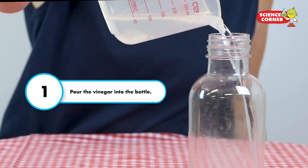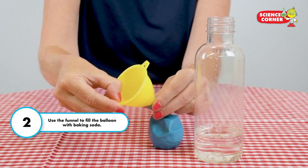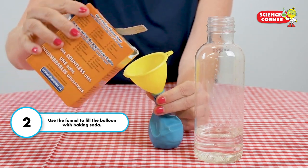Step 1: pour the vinegar into the bottle. Step 2: use the funnel to fill the balloon with baking soda.